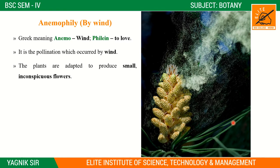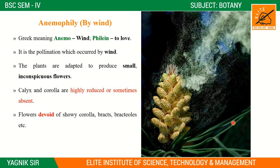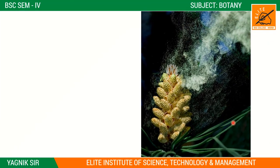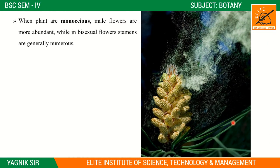Zoophily is divided into five types: by ants (myrmecophily), by insects (entomophily), by birds (ornithophily), by bats (chiropterophily), and by snails (malacophily). Zoophily involves living organisms carrying out pollination.